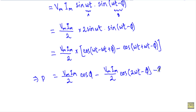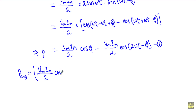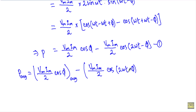Now if I want to take the average value of this instantaneous power, that will be the average power absorbed in the series RL circuit. I will express that average power as P_avg. I will take the average value of the first term Vm·Im/2 · cos(φ) and the average value of the second term Vm·Im/2 · cos(2ωt − φ). Let's call this equation number 2.